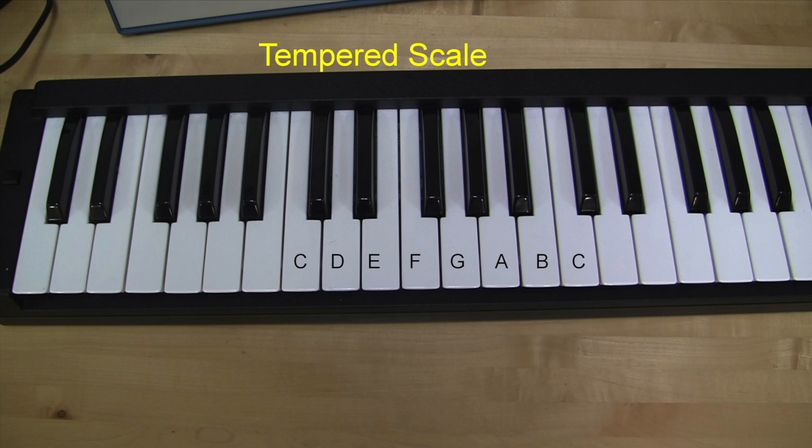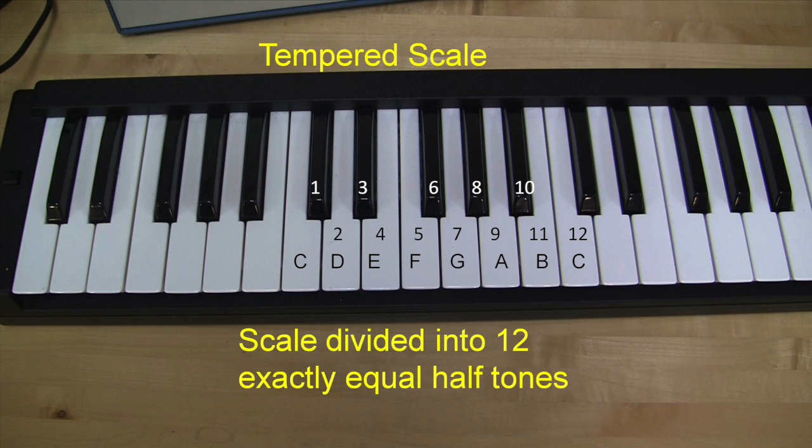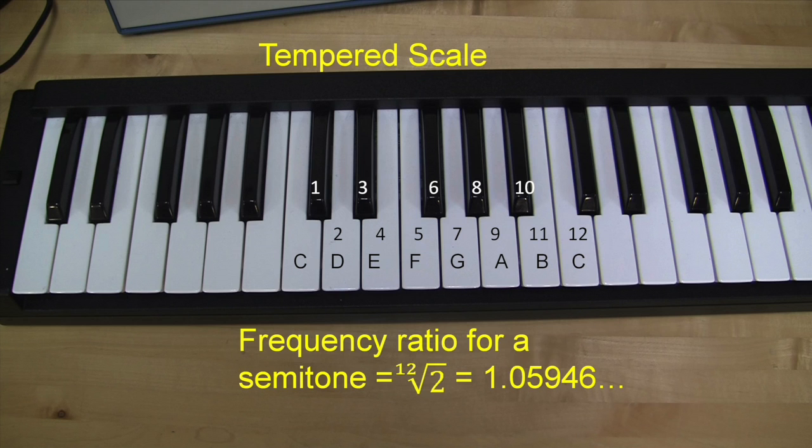Next, you will tune the tempered scale. This scale is divided into 12 exactly equal half tone intervals. To get an octave after 12 semitones, the frequency ratio of a semitone must be 12th root of 2.